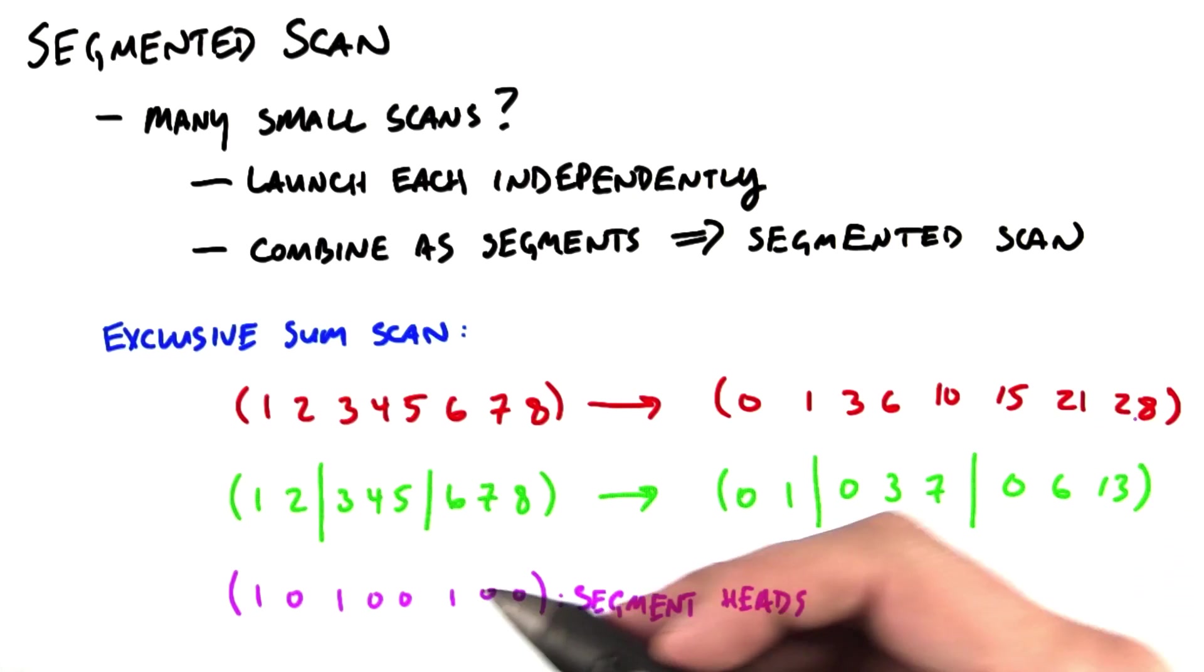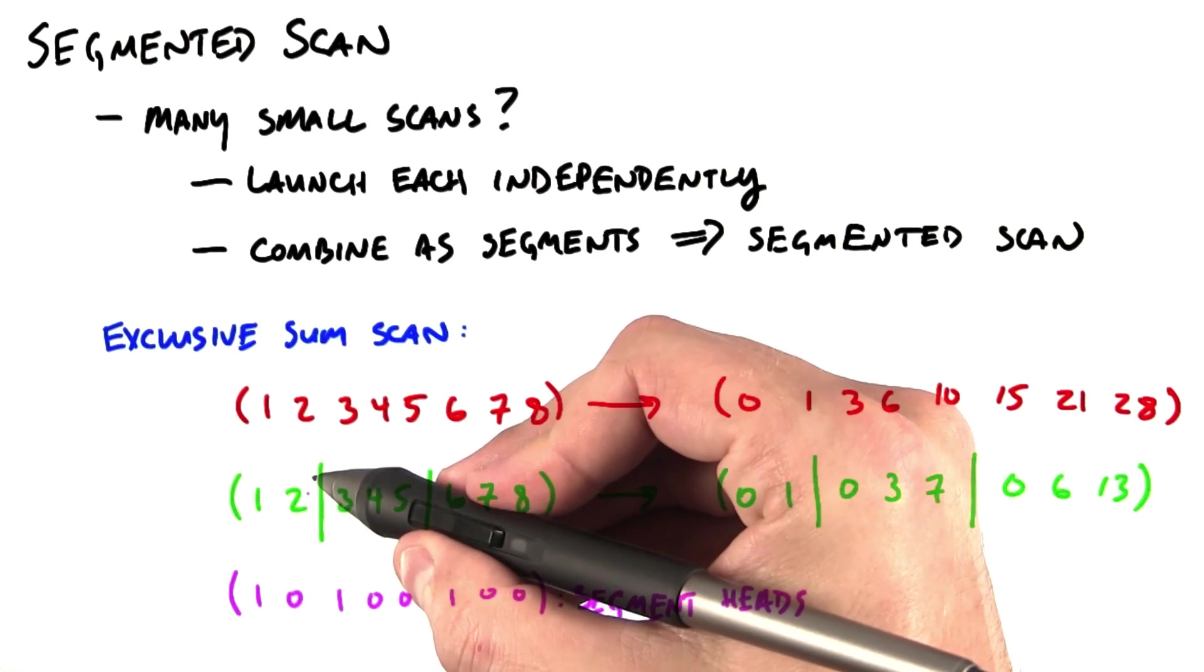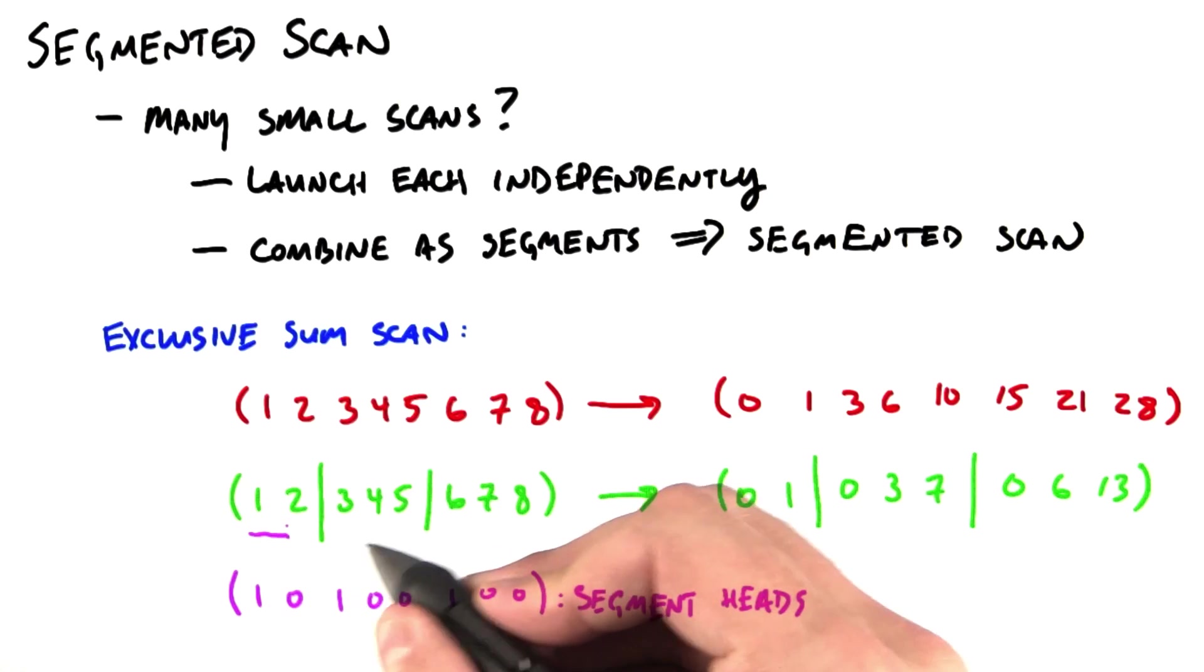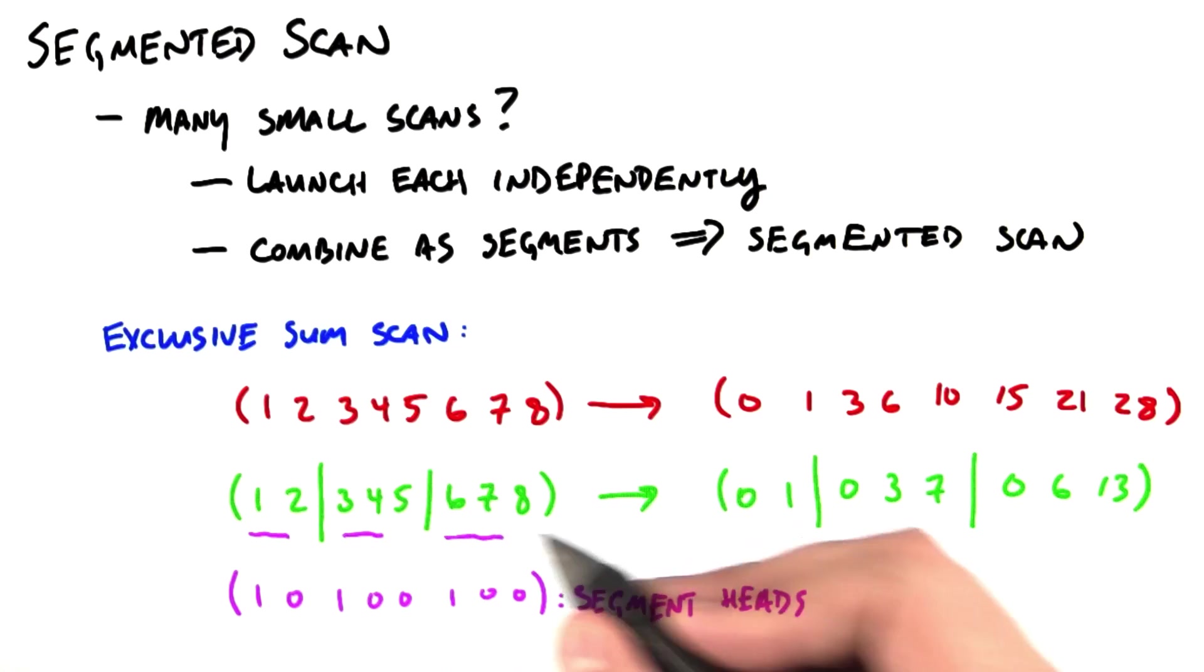Now, what's different about a segmented scan is that we have a normal array, but what we do is we're marking with these large lines here boundaries between these segments. So when we call a segmented exclusive sum scan on this array, what it's going to do is take separate scans of each of these three segments.